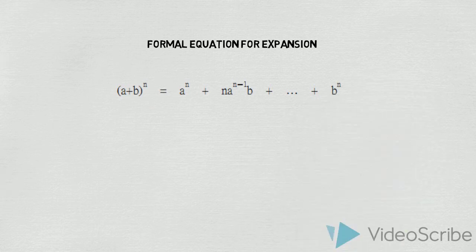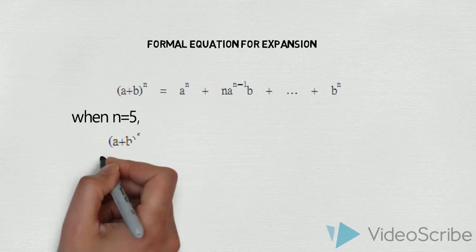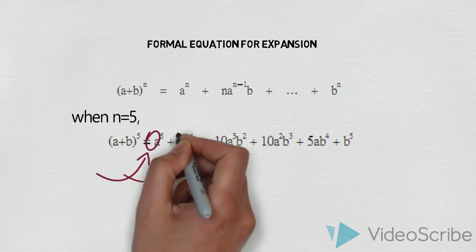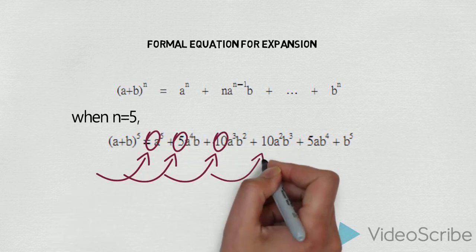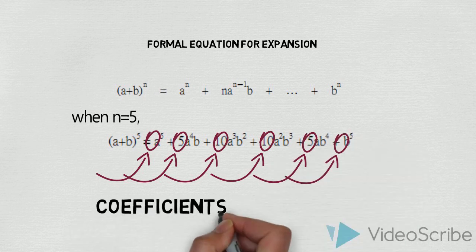which he develops is (a + b) to the power of n. As an example, when n is equal to five, we can see that in front of each term there are numerical coefficients which we call binomial coefficients.